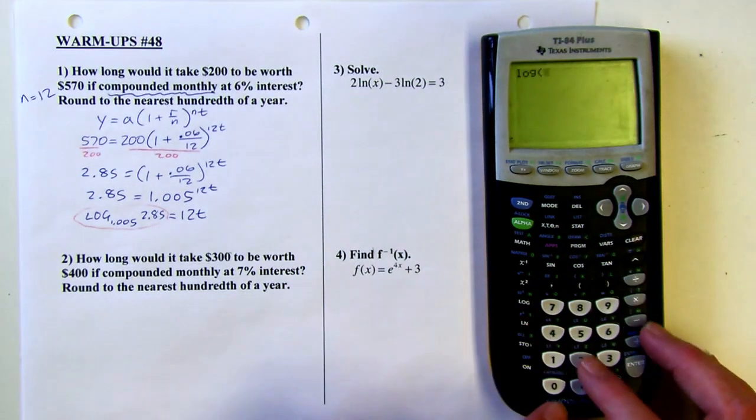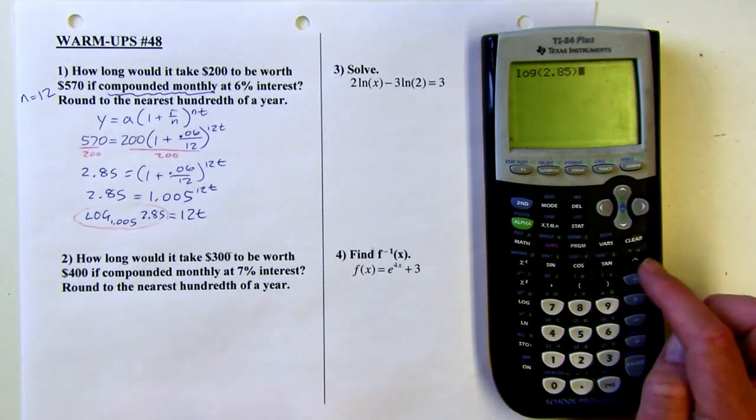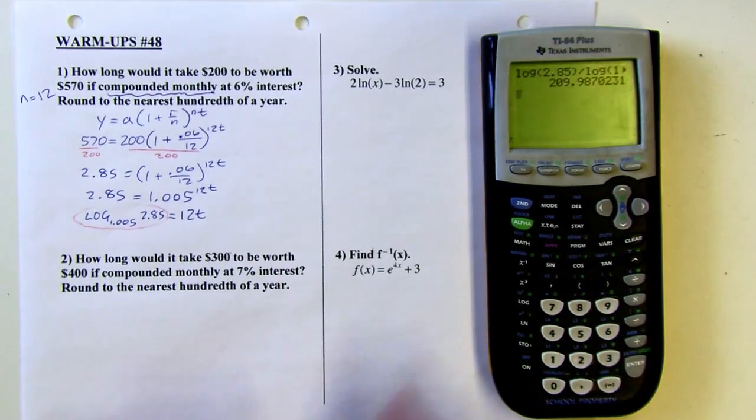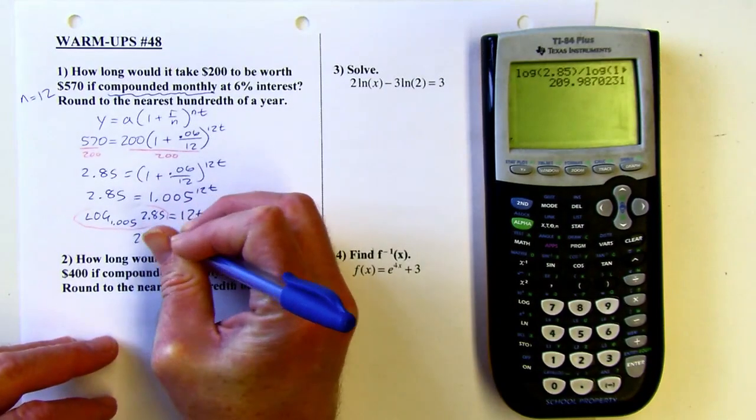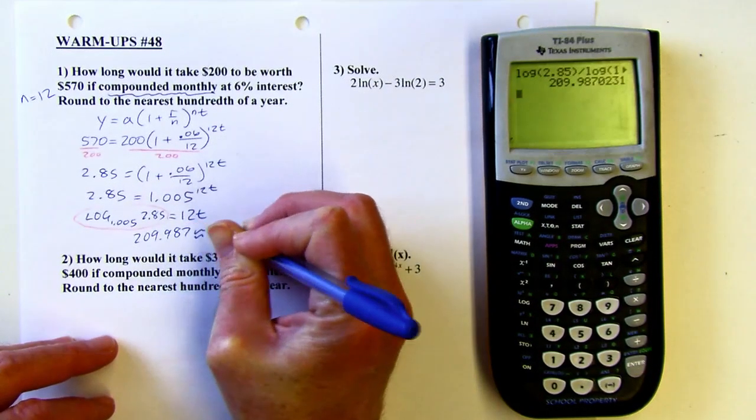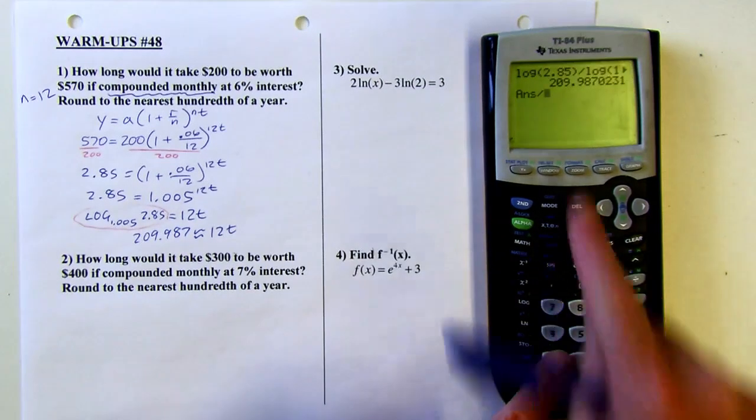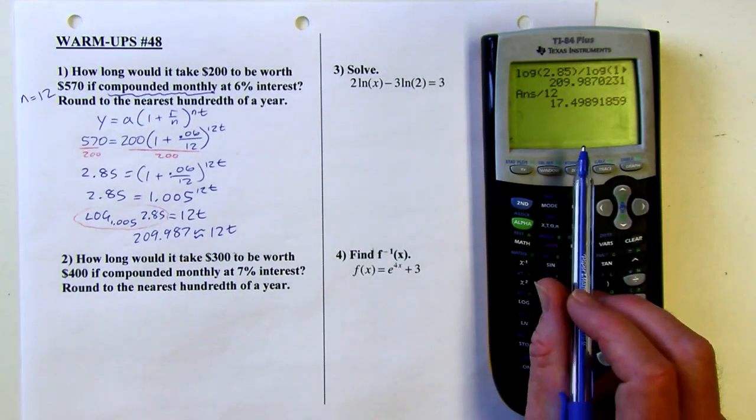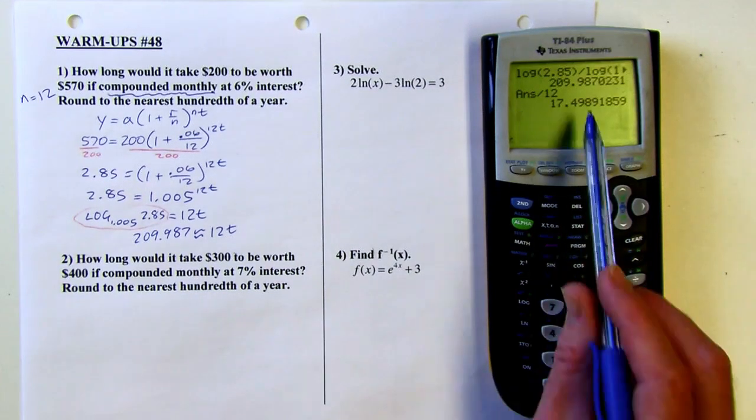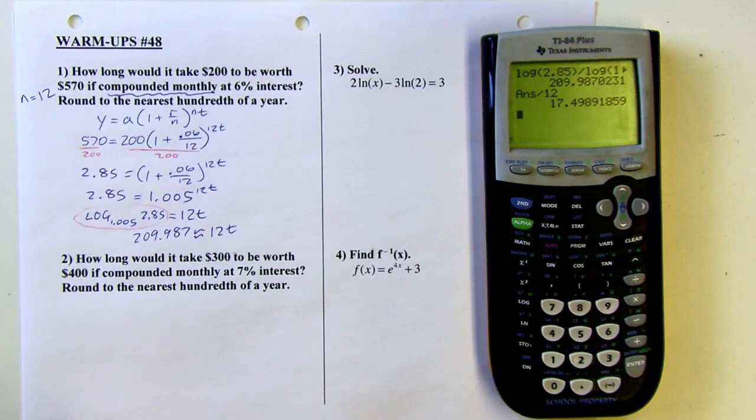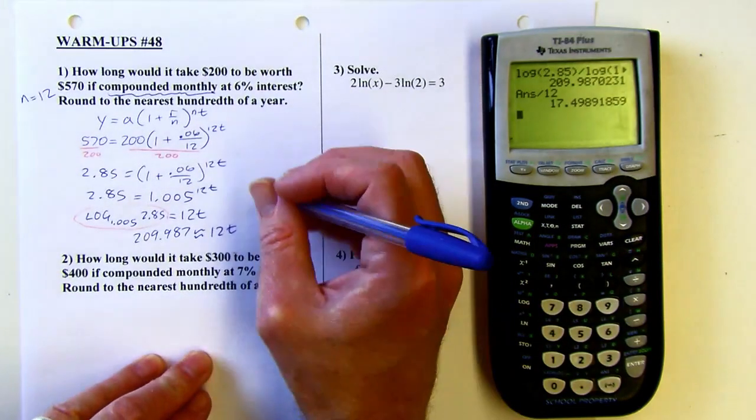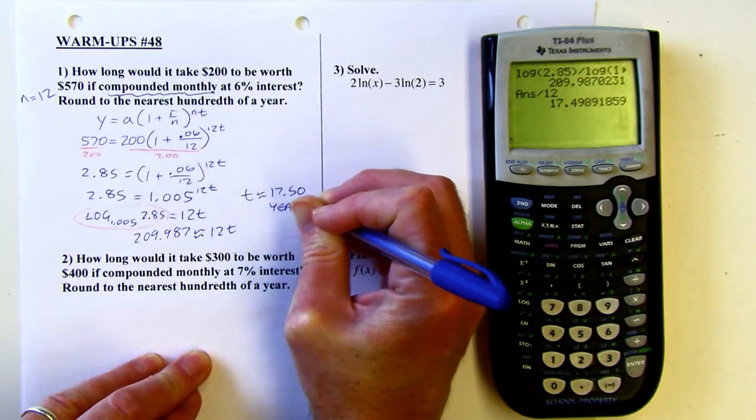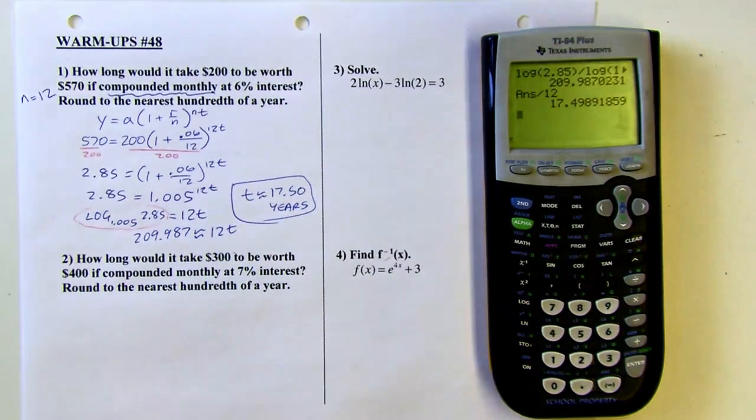So I'm going to put this in my calculator. It's log 2.85 divided by log of 1.005. So log of 2.85. Don't forget to close the parentheses, dividing that by the log of 1.005. So there's the left side. It's about 209.987. And then the last step, divide by 12. So I'm using this whole decimal in my calculator, even though I didn't write the whole thing down. And now I'm going to round it to the nearest hundredth of a year, so I'm going to call that 17.50 is what it's going to round up to in terms of hundredths. And that's that many years.